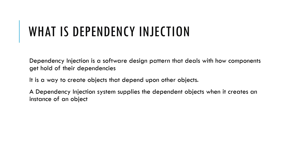So what is dependency injection? Dependency injection, or DI, is a software design pattern that deals with how components get hold of their dependencies. It is a way to create objects that depend upon other objects. The dependency injection system supplies the dependent object when it creates an instance of that object.